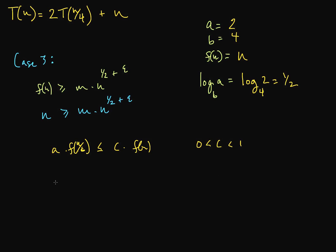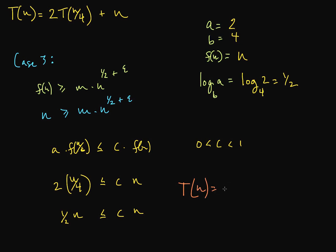We also check the second condition: a · f(n/b) ≤ c · f(n). That gives us 2 · (n/4) ≤ c · n, which simplifies to n/2 ≤ c · n. An obvious choice is c = 1/2, and this holds. Therefore we have Case 3, and T(n) is Theta of f(n), which is Theta of n.